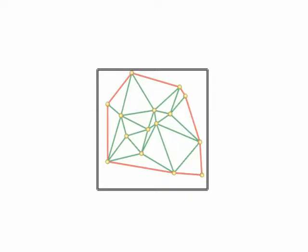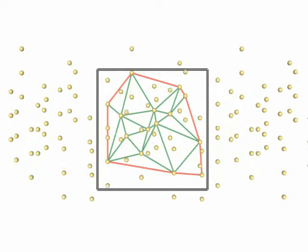We cannot claim any more to compute a triangulation of the convex hull, because if we replicate the points in all directions of space, we see that we do not have the notion of a convex hull anymore.